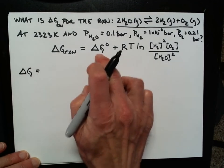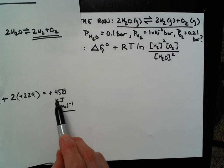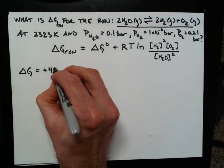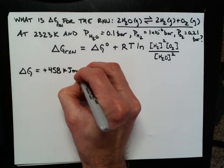that's going to be my standard delta G, which we calculated to be positive 458 kilojoules per mole. So let me write that in here, 458 kilojoules for every mole,